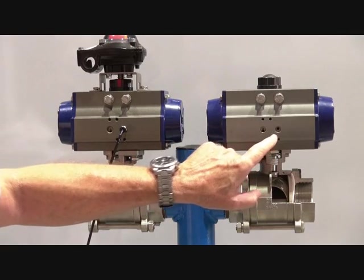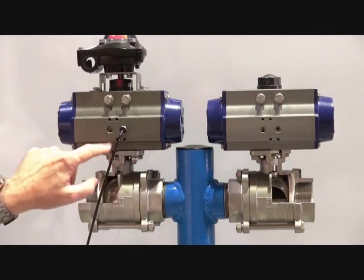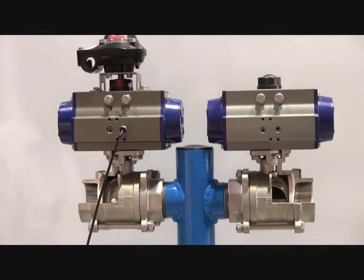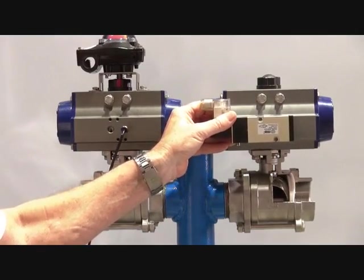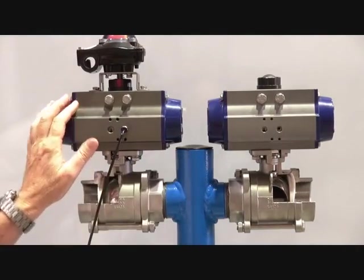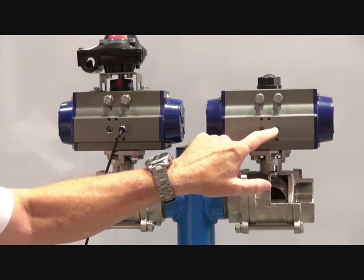Double acting takes air in either one port or the other. This is a NEMUR interface port on these units. With the double acting, we can put a NEMUR solenoid directly onto there, or we can use a standalone solenoid and run the two air lines to either side.